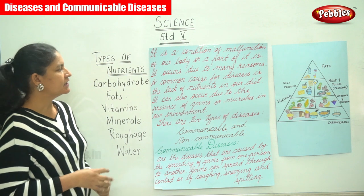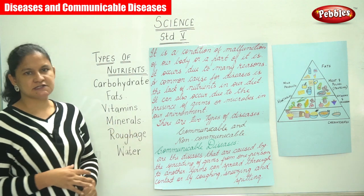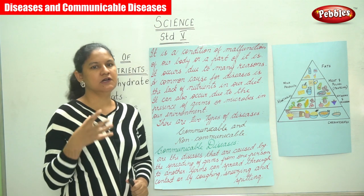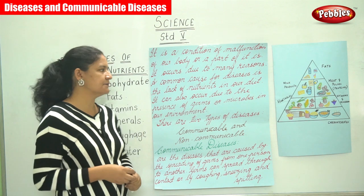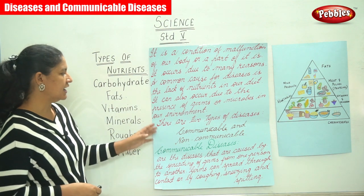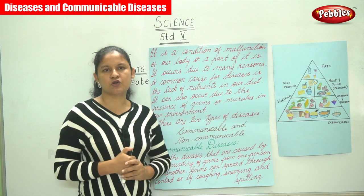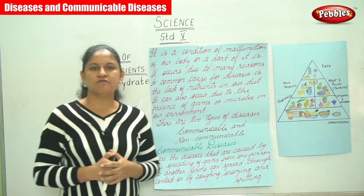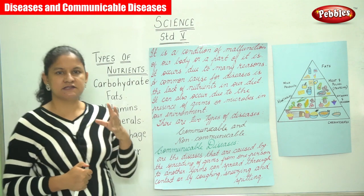Disease occurs due to many reasons. A common cause is the lack of nutrients in our diet — that is, we do not follow the food pyramid or a balanced diet, and this leads to disease. It can also occur due to the presence of germs or microbes in our environment. So there are two causes: lack of nutrients in our diet, or the presence of germs or microbes in our surroundings.